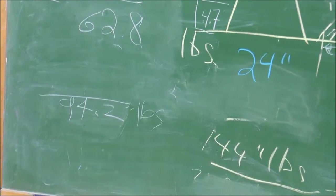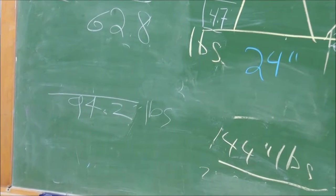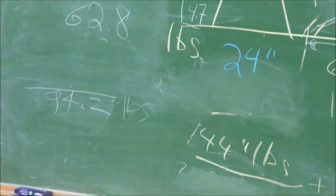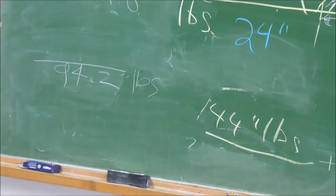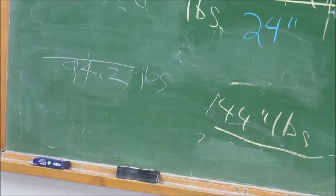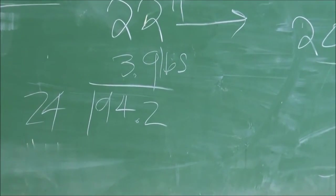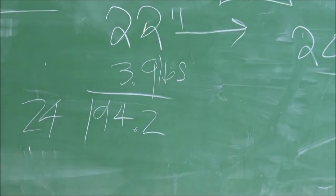That's inch pounds. Now we've got to figure out just the pounds part. So we divide 94 by 24, and 24 is the distance, and we get 3.9 pounds.